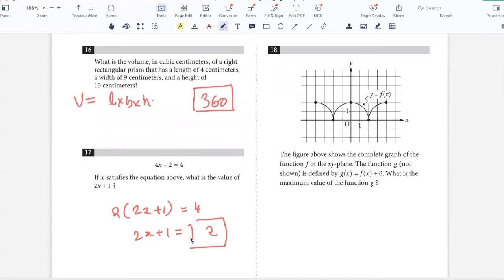The figure above shows the complete graph of the function F in the XY plane. The function G not shown is defined by G of X equals F of X plus 6. What is the maximum value of the function G? The maximum value of this function is 2. G of X will be 6 units above this. So the maximum value of G of X will be 2 plus 6, which is 8.